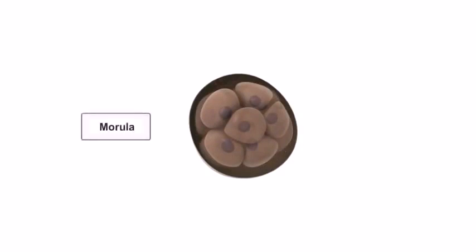This cell division continues and by day three there is a cluster of 16 identical blastomeres. This is known as the morula.